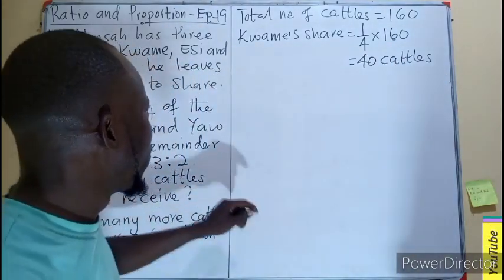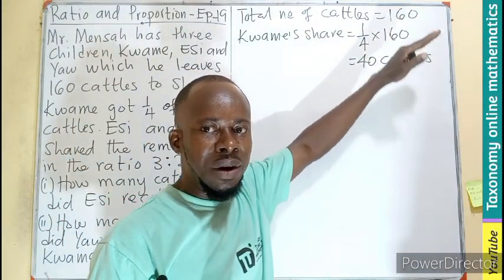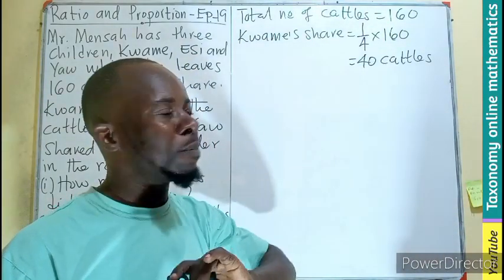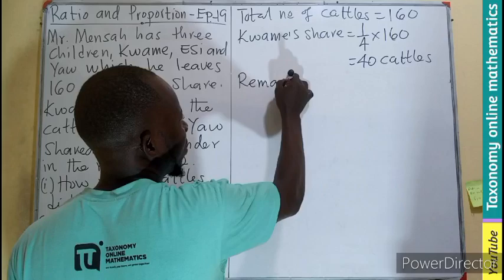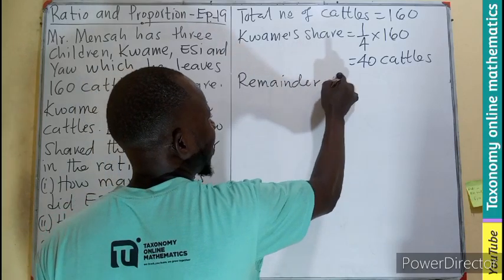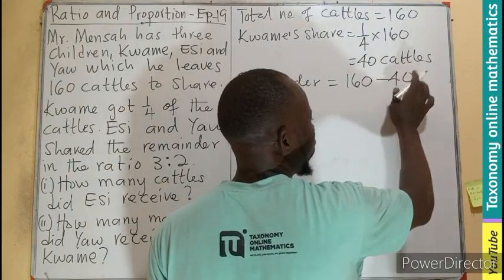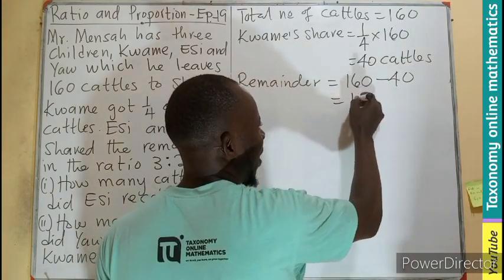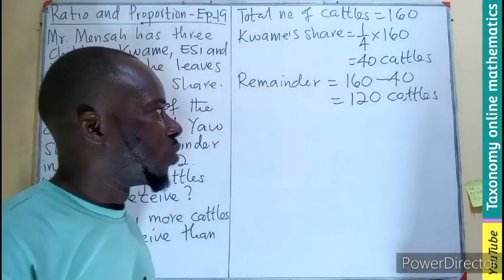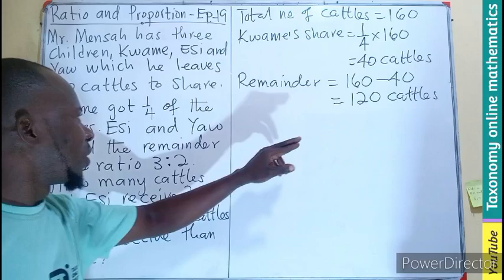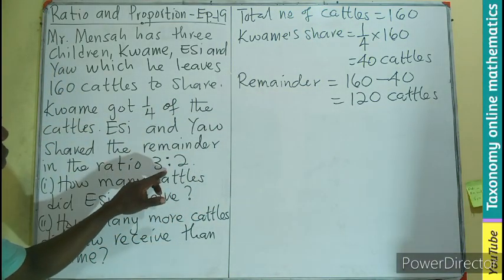If Kwami takes 40 cattle out of 160, what remains for the other two to share? The remainder is 160 minus 40, which leaves us 120 cattle. This 120 cattle is what will be shared between Ac and Yam in the given ratio.